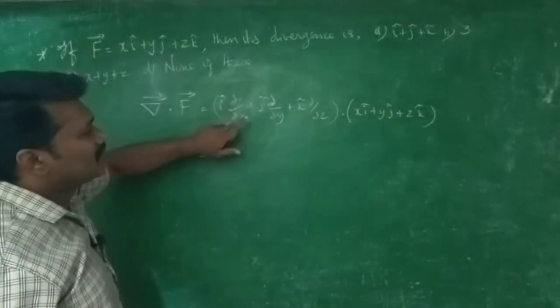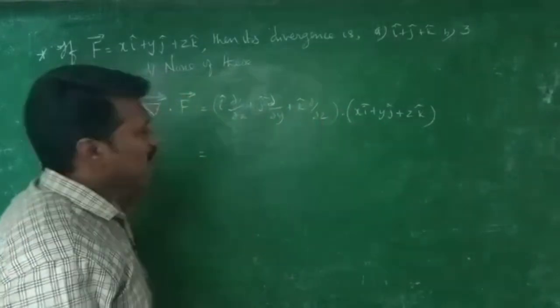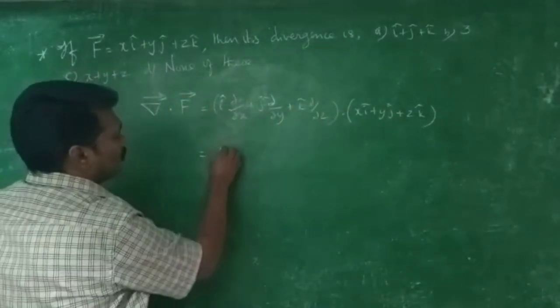Then i-cap ∂/∂x of x... i dot i is one, so ∂/∂x of x plus one, i dot j...